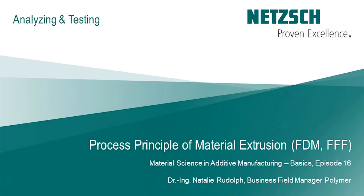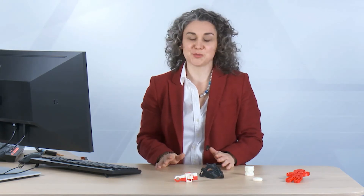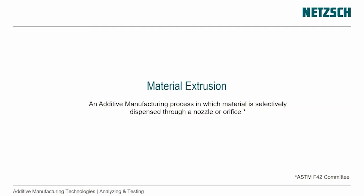In this episode, I'll introduce the material extrusion process. Material extrusion is the process that most people are familiar with. It is defined as an additive manufacturing process in which material is selectively dispensed through a nozzle or orifice.